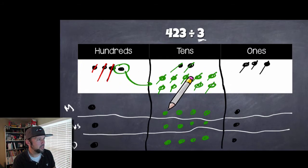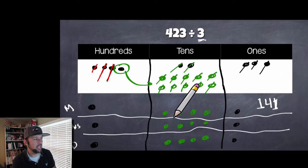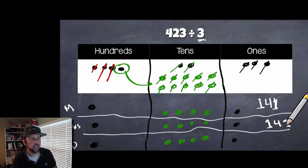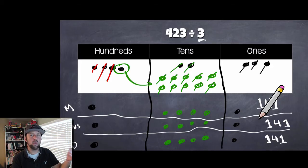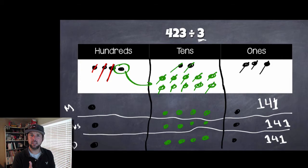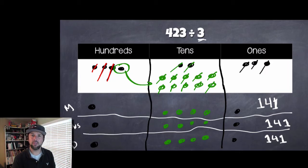Looking at my group, I have 100 and four 10s and one 1 — that's 141 Sour Patch Kids. Mrs. Walker gets the same, and my daughter gets the same. So we were able to divide 423 by 3 and each person gets 141. That's a three-digit dividend divided by a one-digit divisor, giving us a quotient of 141. Pretty exciting stuff!